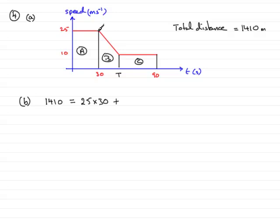So if we look at the sum of the parallel sides, that will be 25 plus 10, so that's going to be 35. It's multiplied by the distance apart, which is going to be T minus 30, and that's all divided by 2.